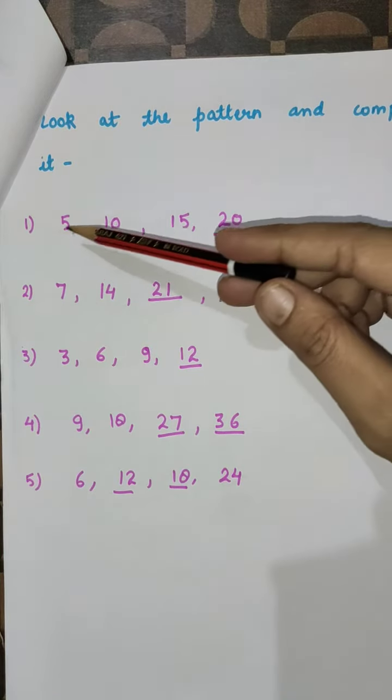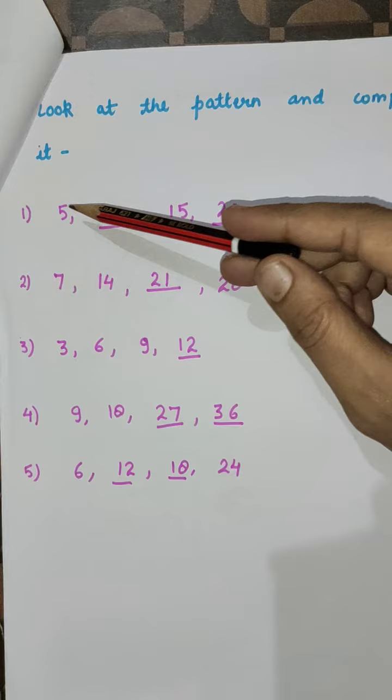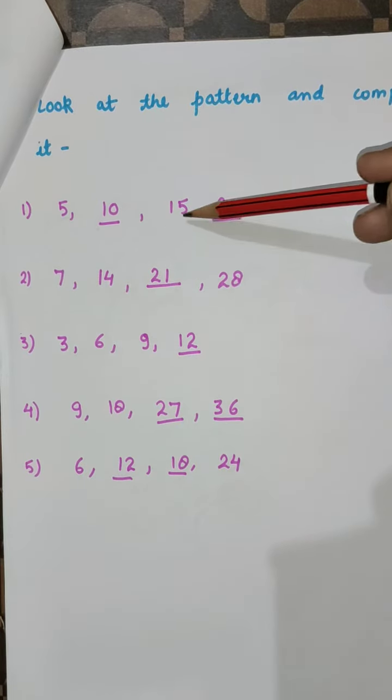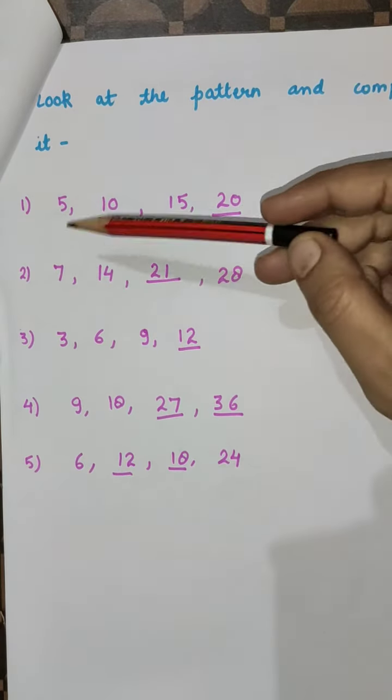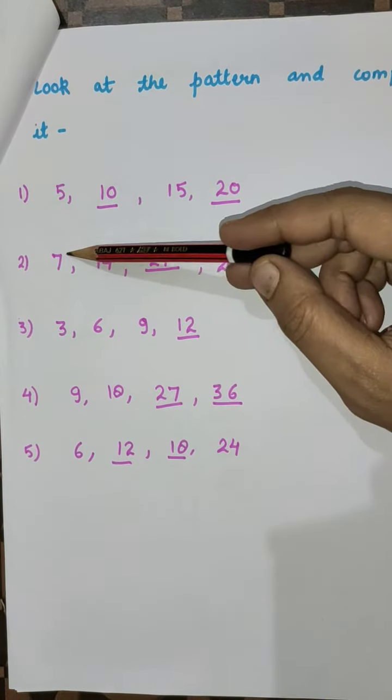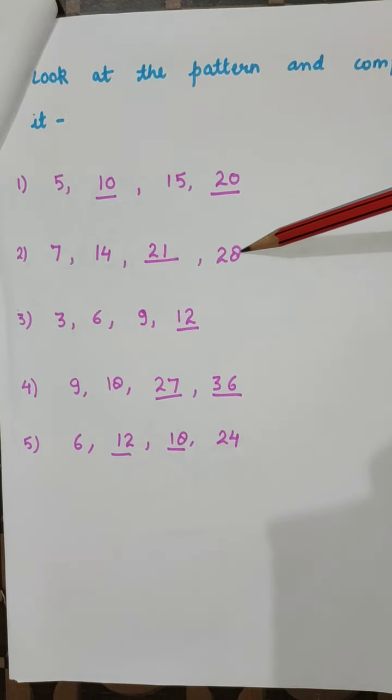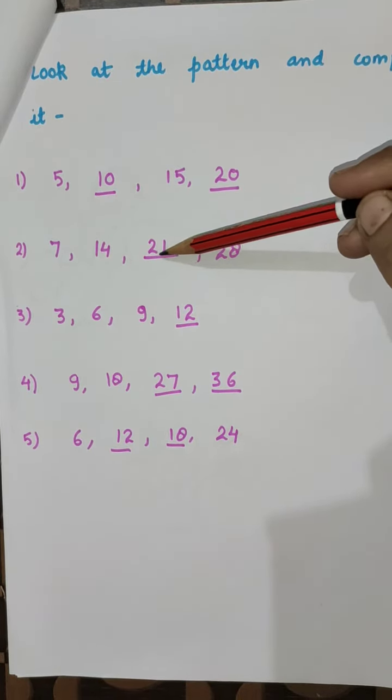Here's a table. You can see 5, one is missing, then 15, then 20. So 5×1 = 5, 5×2 = 10, 5×3 = 15, 5×4 = 20. Now here is 7, 14, one is missing, then 28. You can see 7×1 = 7, 7×2 = 14, 7×3 we don't know, then 7×4 = 28. It means we have to write 7×3, which is 21.